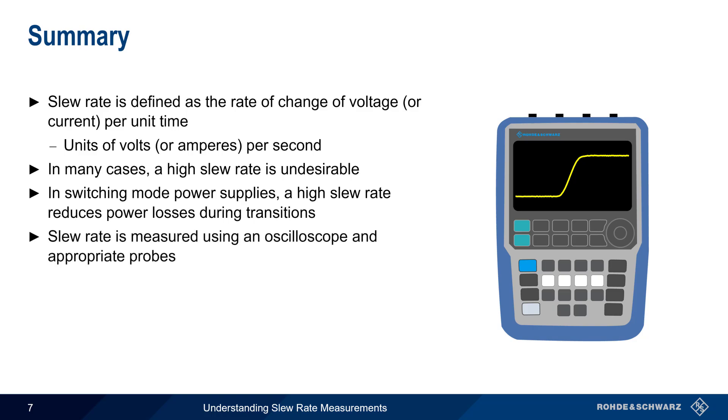Slew rate is measured using an oscilloscope and appropriate voltage or current probes. Although the measurement is very simple to make, it is important to ensure that both the scope and the probes have sufficient bandwidth and dynamic range, particularly when measuring signals with very high slew rates.